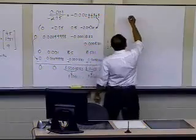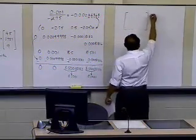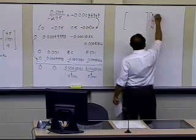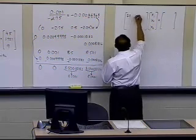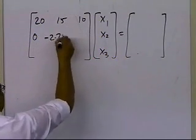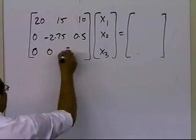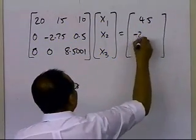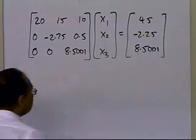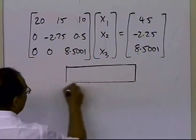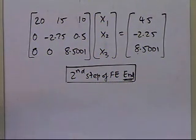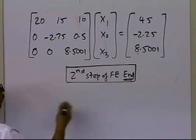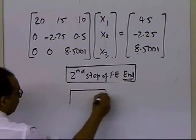At the end of the second step of forward elimination, the matrix is: row 1 — 20, 15, 10; row 2 — 0, minus 2.75, 0.5; row 3 — 0, 0, 8.5001. Right-hand side values are 45, minus 2.25, and 8.5001. Since we have three equations and three unknowns, there are only two steps of forward elimination, so this completes all forward elimination steps. Now we need to conduct back substitution steps.